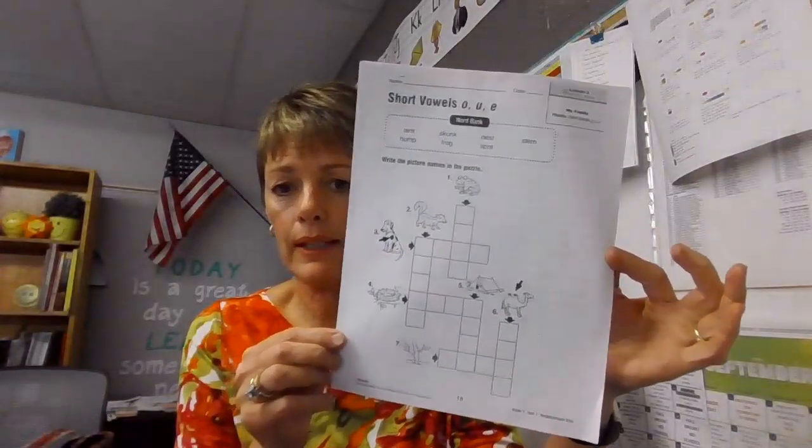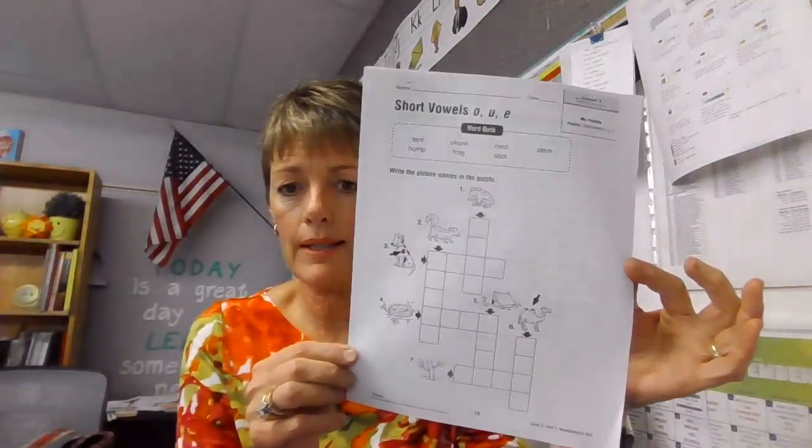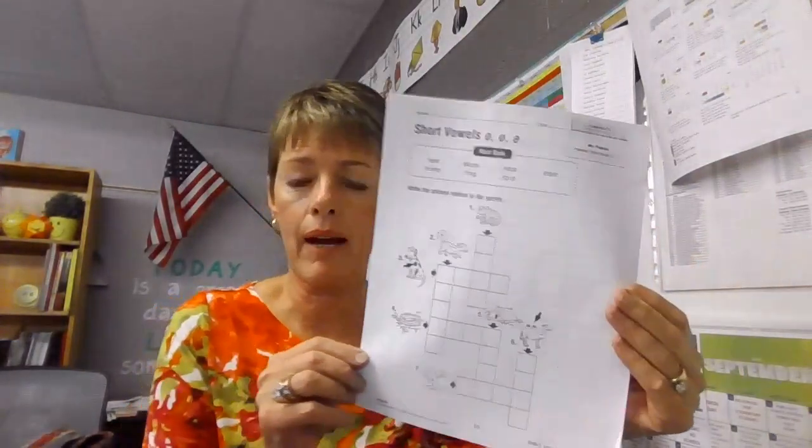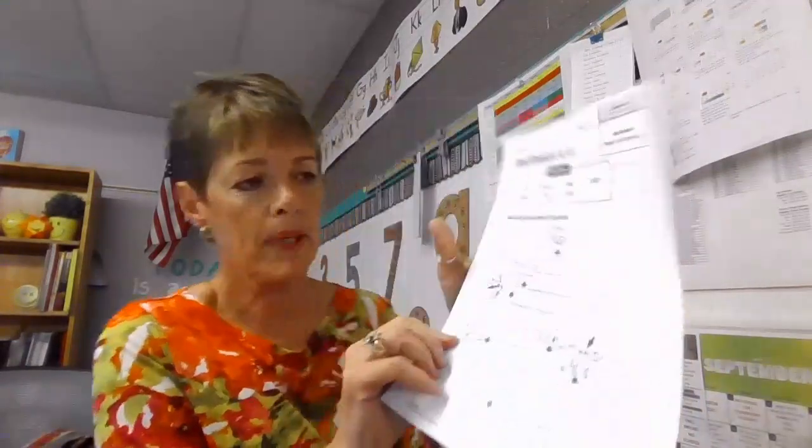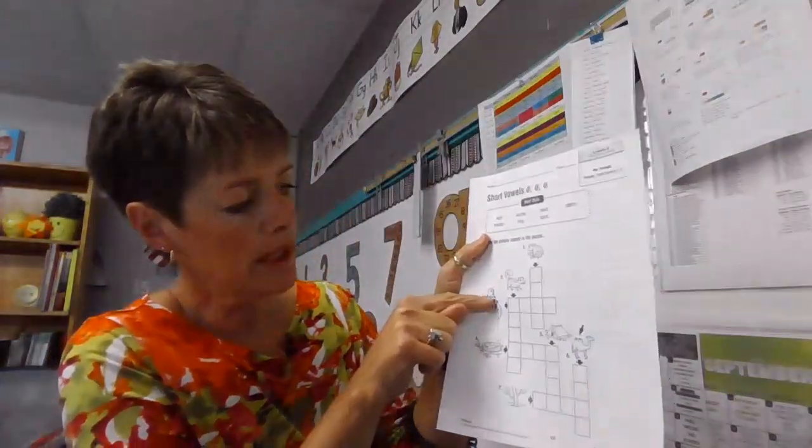Now, this crossword puzzle is a little different than the last one that we did because now we're going to have picture clues. And the picture clue tells you that number three is what's on that dog and it goes across that way. I mean, it gives you arrows.